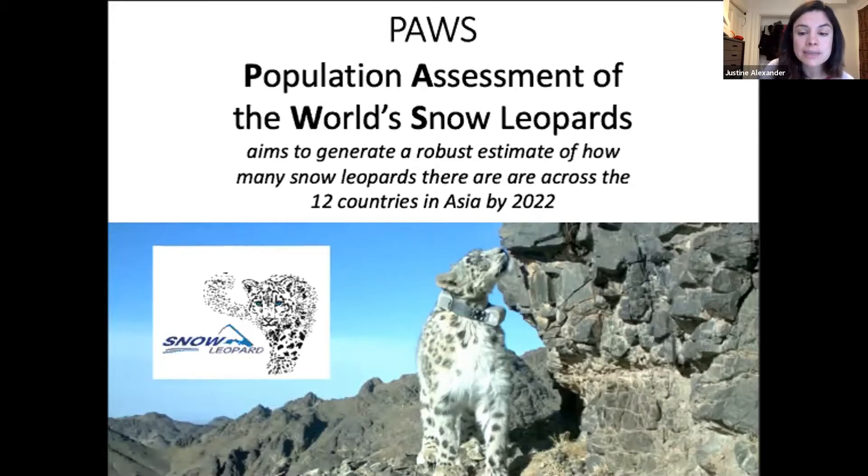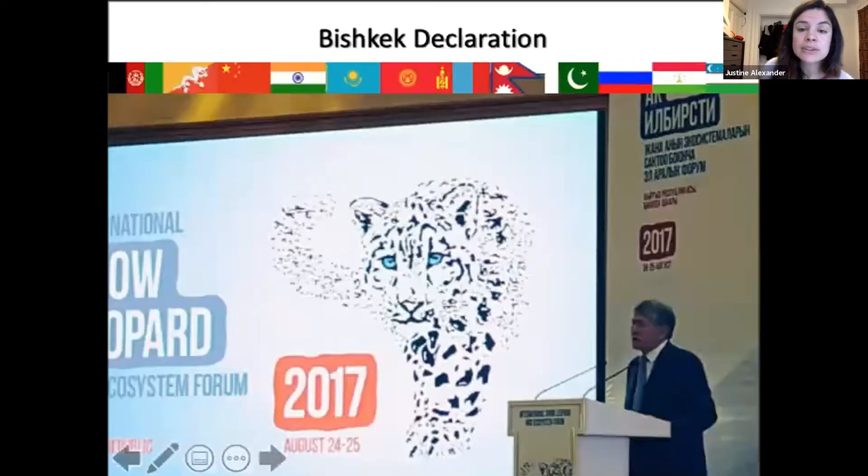The task is very challenging, and it's supported through the GSLEP program and all range governments. It actually started and was launched in 2017 through the GSLEP-Bishkek Declaration with the ambitious goal of estimating the population by 2022.